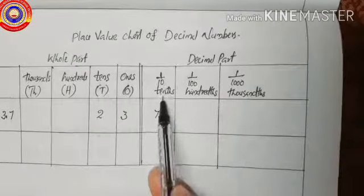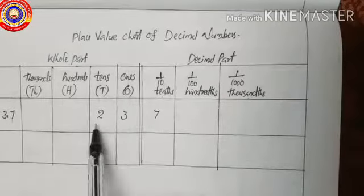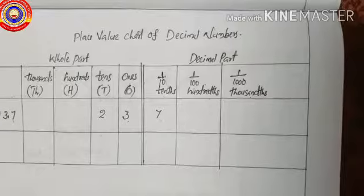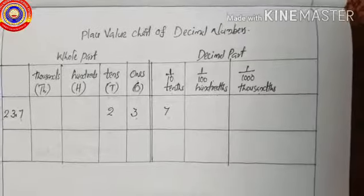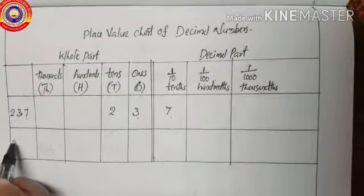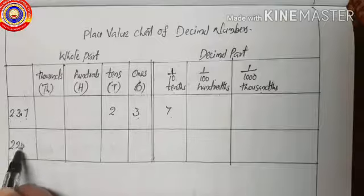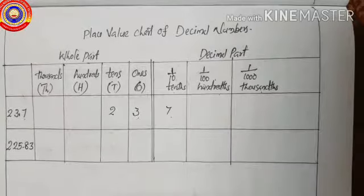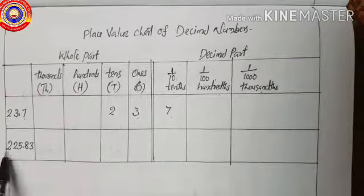So the place values of decimal numbers are: ones, tens, hundreds, thousands on the whole part, and one-by-ten, one-by-hundred, one-by-thousand on the decimal part.